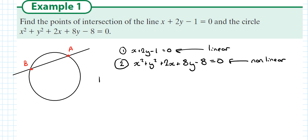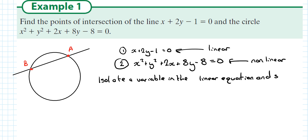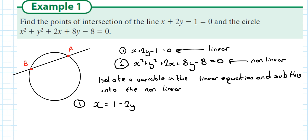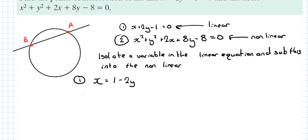The approach we use is to isolate a variable in the linear equation and substitute it into the nonlinear. What variable would I isolate in equation one? X is definitely the easier of the two variables to isolate. So from equation one I have isolated x, and now I'm going to substitute that into equation two.